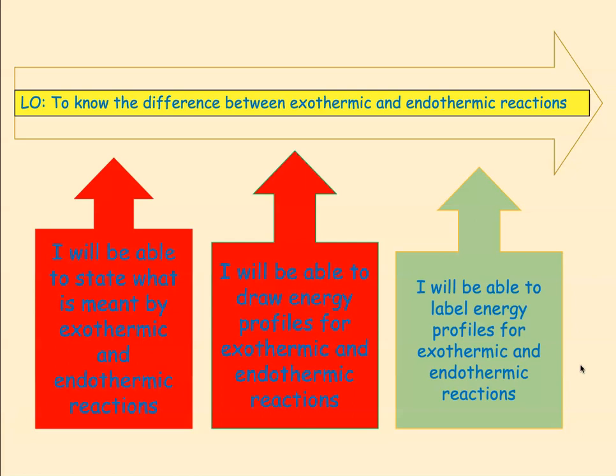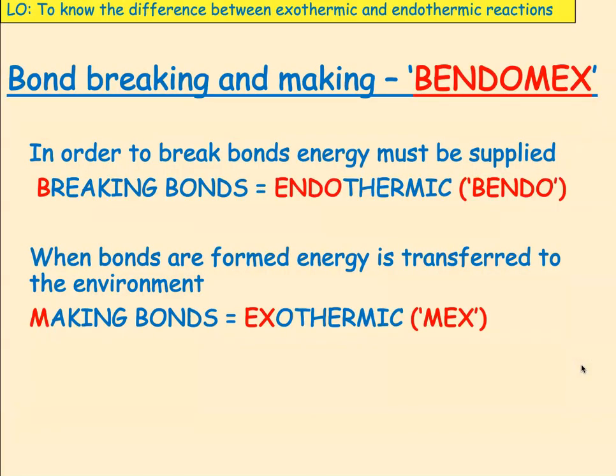That's our second success criteria. Now we want to label the energy profiles. Bond breaking and bond making — Bendomex is the way I remember it. In order to break bonds, energy must be supplied, so breaking bonds equals endothermic — Bendo: breaking and endo. When bonds are formed, energy is transferred to the environment, so making bonds is exothermic — Mex. Bendomex.